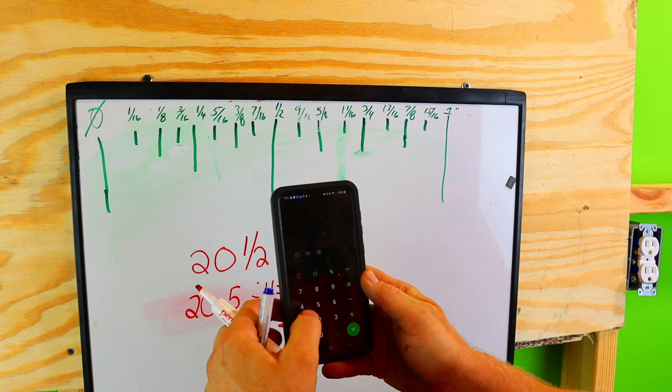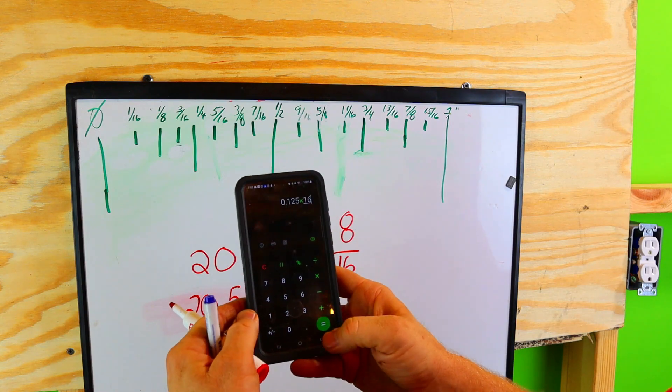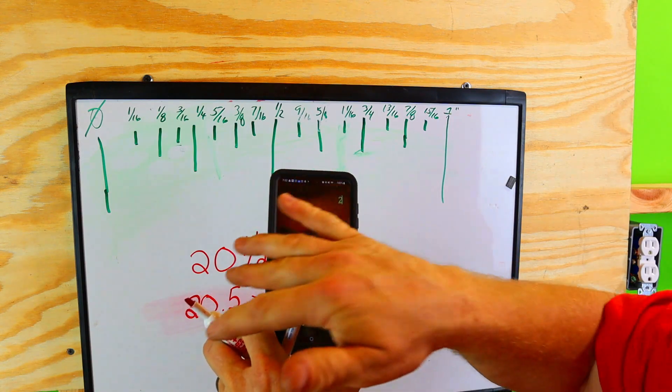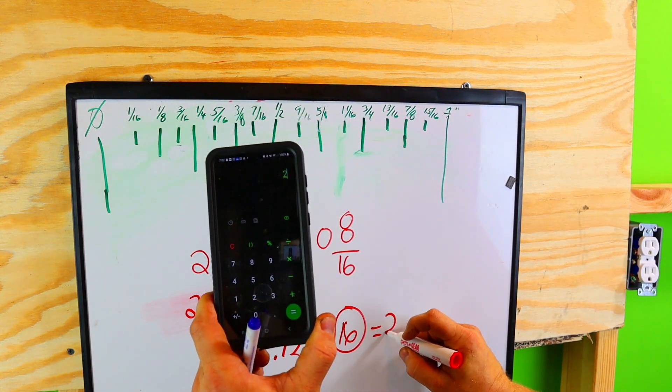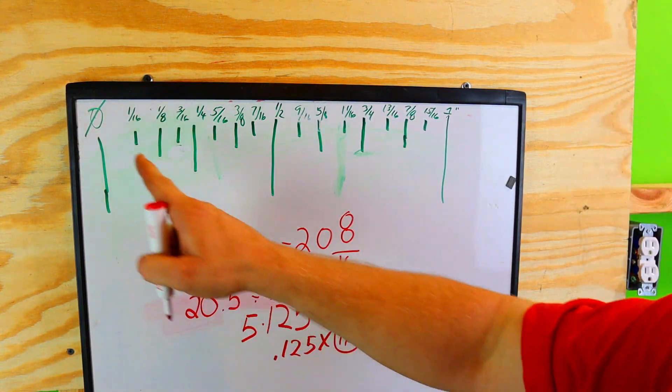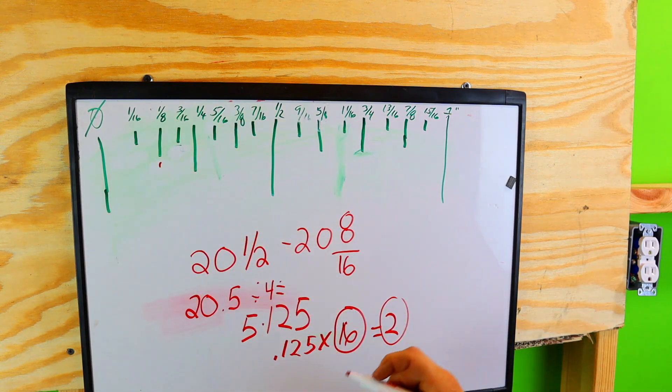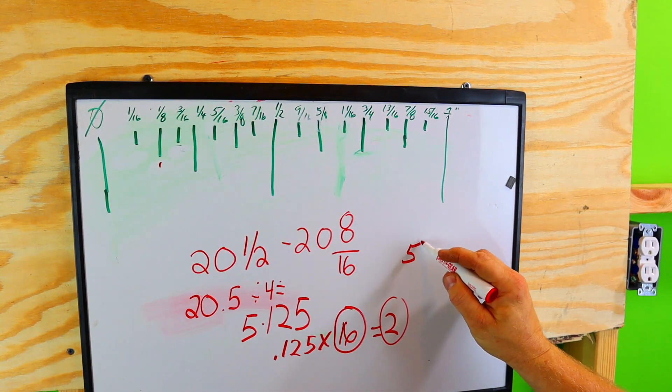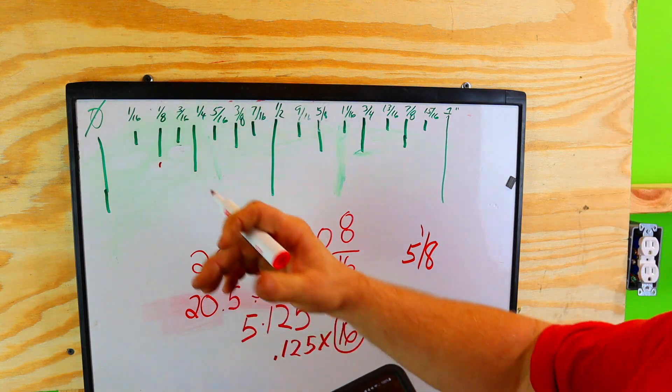So we're going to take the 0.125 and we're going to times that by 16, and we're going to see where it says two. So that equals two. Now what this number right here represents is two marks on here, so it's one, two. So right here you would have five and an eighth, and that's as easy as that.